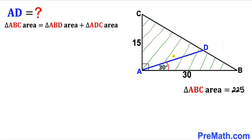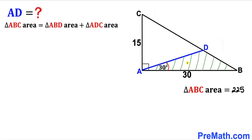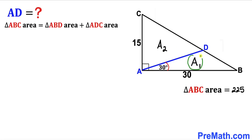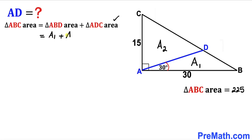Now let's make an observation: the area of the big triangle ABC equals the area of triangle ABD plus the area of triangle ADC. Let me represent the area of triangle ABD as A₁ and the area of triangle ADC as A₂. Then the area of triangle ABC equals A₁ plus A₂.